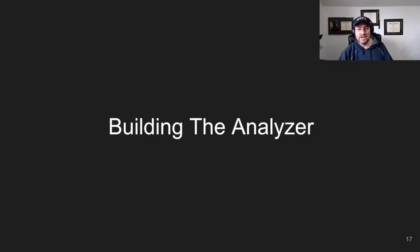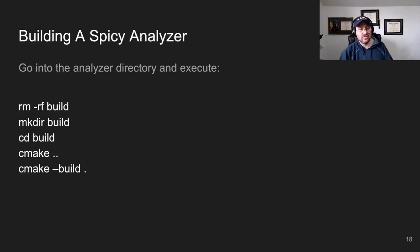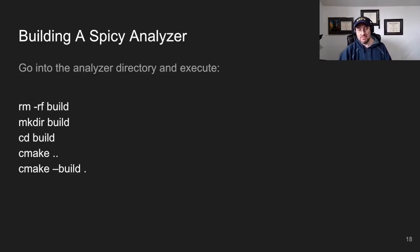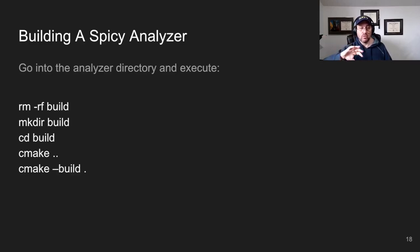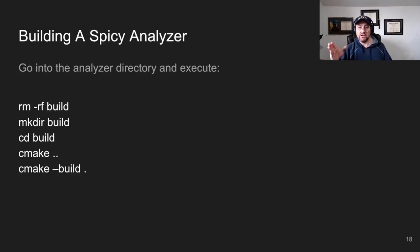To build an analyzer, go into the analyzer directory, create a build directory, run cmake to configure things, and then run cmake --build . — that last argument is literally double-dash build followed by a dot. This runs the configuration and compilation process.